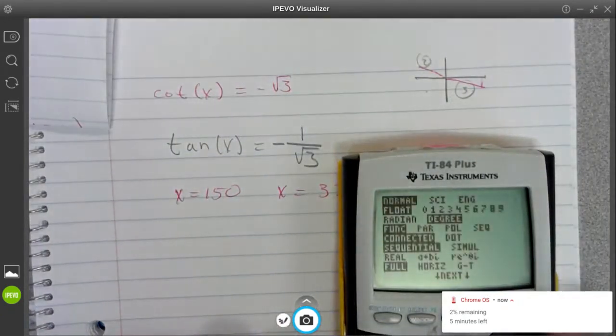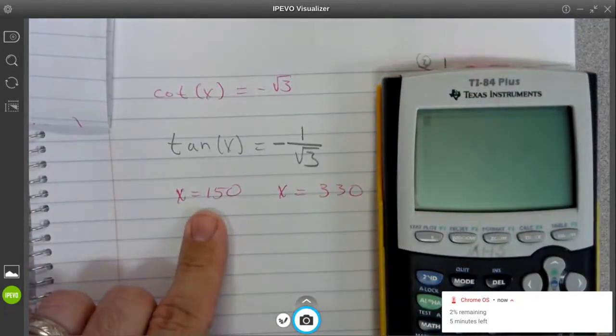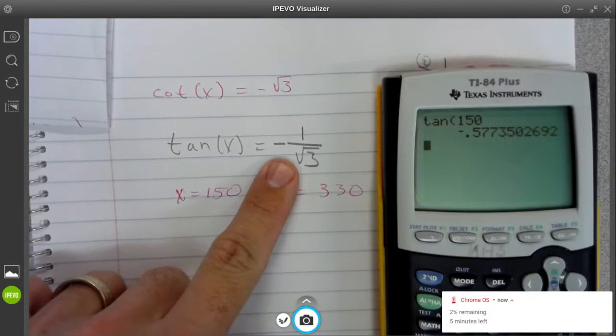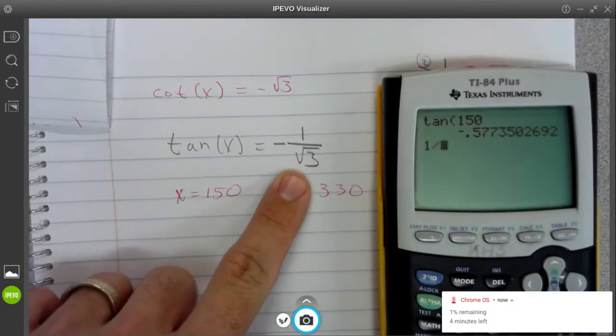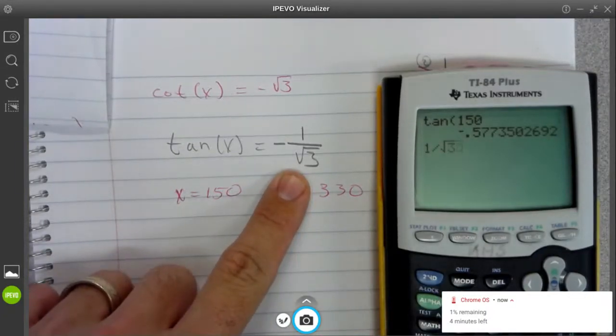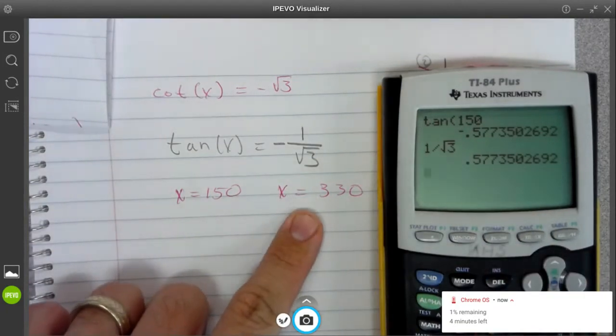I'm in degree mode here. If I do tangent of 150, it is negative. And if I divide this out, 1 divided by root 3, yep, 0.577. Nice.